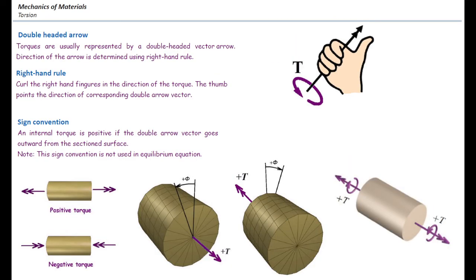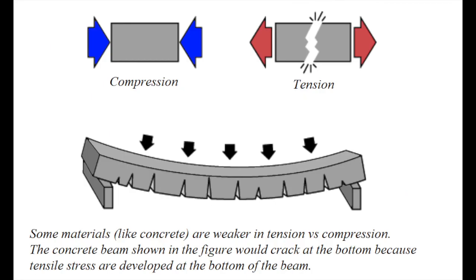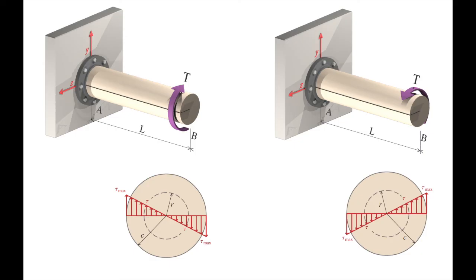The last part is sign convention. For torsional elements, we need to use the correct sign to add up deformations. For stresses, we don't care about the sign of torque because it only changes the direction of stress, which doesn't matter — unlike axially loaded elements where materials may behave differently in compression versus tension. For torsion, or shear stress, it just changes the direction of the shear stress acting, which in most cases doesn't matter.